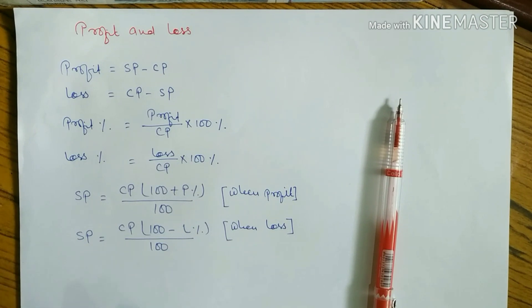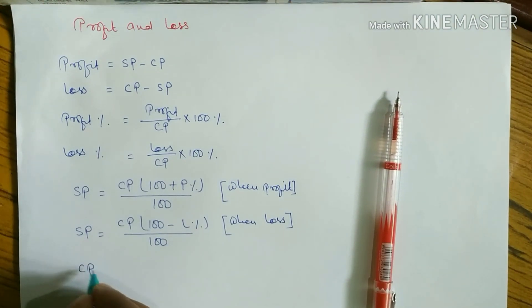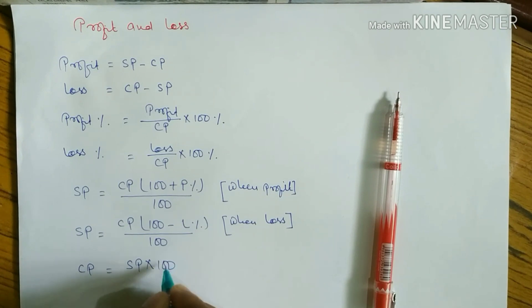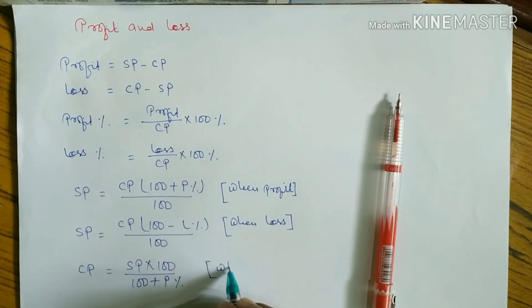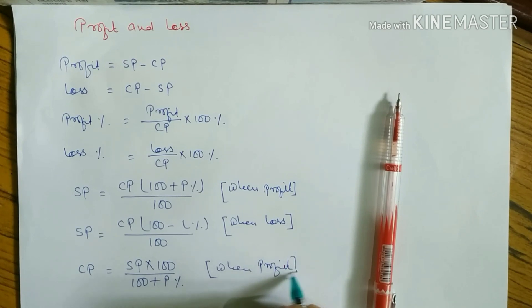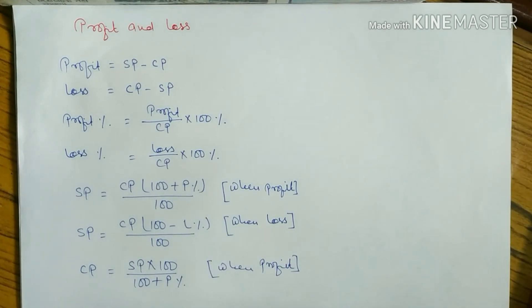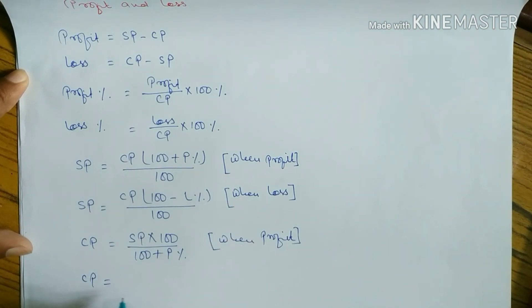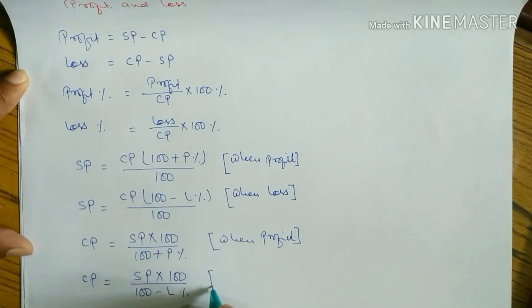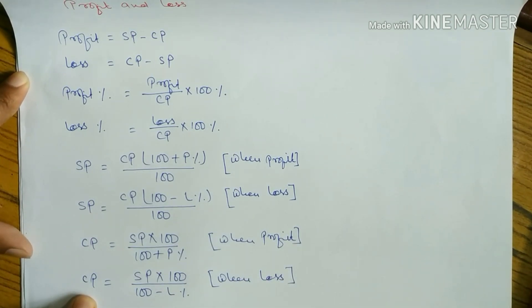To find cost price when selling price and profit percent are given, the formula is: CP = SP × 100 / (100 + Profit%). When there is a loss, the formula is: CP = SP × 100 / (100 − Loss%). These are the CP formulas for profit and loss cases.